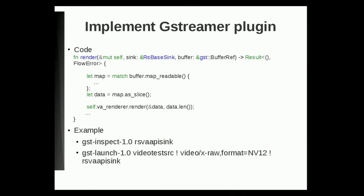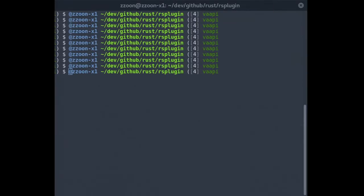And currently it's handling the VA surface directly because it doesn't use a buffer pool for the location. So it is doing a copy from the incoming buffer to a new VA surface, which means it is not zero-copy. But this is a temporary limitation for the proof of concept.